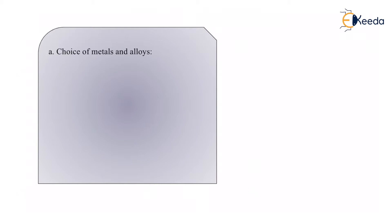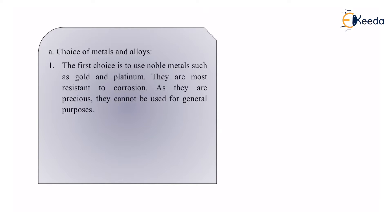The first method is the choice of metals and alloys — we need to choose our metals and alloys very wisely. The first choice is to use noble metals such as gold and platinum. Gold does not decay very easily; gold jewellery kept in the presence of air will not react with it. The rate of reaction is extremely low — it takes tens of thousands of years for one gram of gold to react with the environment. Similarly, platinum is a noble metal that reacts very rarely.